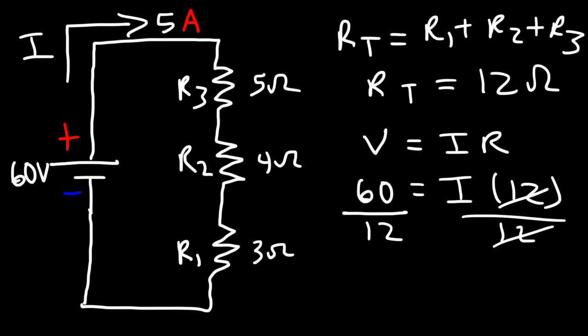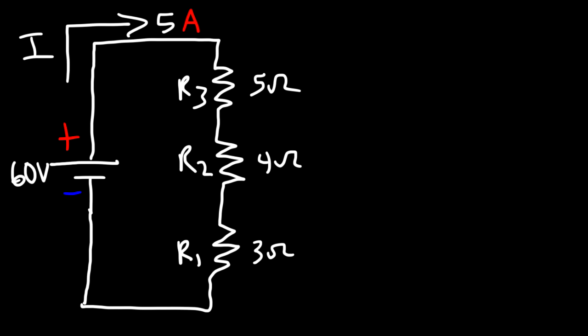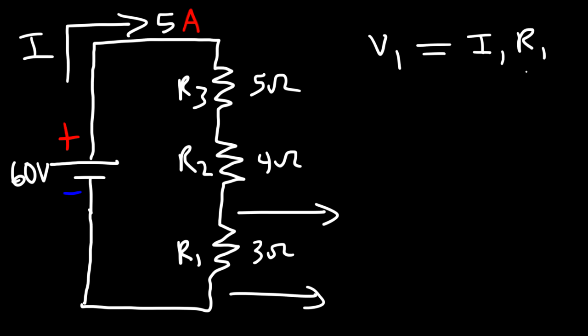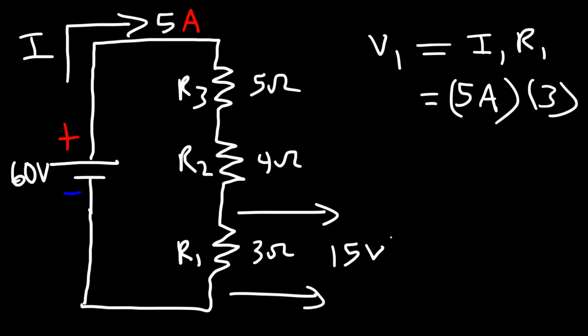Now once we have the current, we can calculate the voltage drop across each resistor. What is the voltage drop across the first resistor? In this series circuit, the current that flows through the circuit is the same through R3, R2, and R1, because there is only one path for the current to flow — it's going to be the same, 5 amps. To find the voltage across the first resistor, we use the current times the resistance value of that resistor. I1 is 5 amps and R1 is 3, so it's 5 times 3, giving us 15 volts across R1.